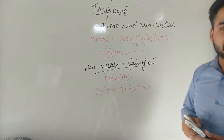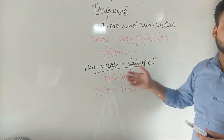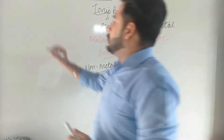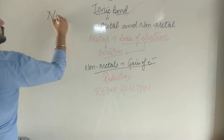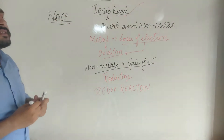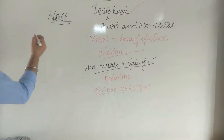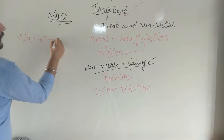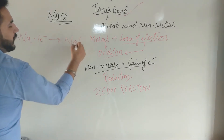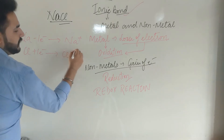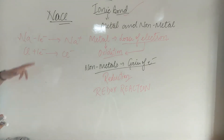A reaction in which oxidation as well as reduction take place is called a redox reaction. Let's discuss with the example of NaCl. NaCl is an ionic compound. First, Na loses one electron and converts into Na⁺, and Cl gains one electron and converts into Cl⁻. This loss of electron is called oxidation.